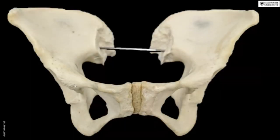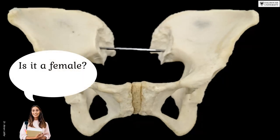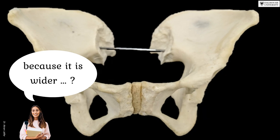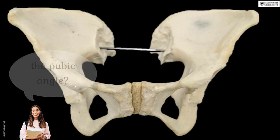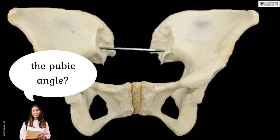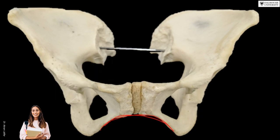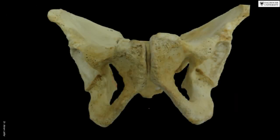Now I'm asking about the sex of this pelvis. The sub-pubic angle is wide — like a Roman arch, or the angle between the index finger and thumb. That is the reason this is most likely a female pelvis. And obviously this other one is a male pelvis — you can see clearly that the angle here is narrower.